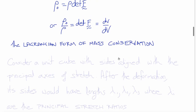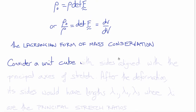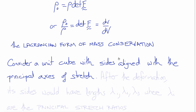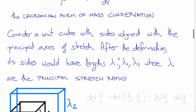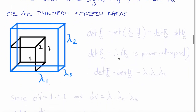To illustrate this, let's consider a unit cube whose sides are aligned with the principal axes of stretch. After the deformation, the sides would now have lengths λ₁, λ₂, and λ₃, which are the three eigenvalues of the stretch tensor U — so they are the principal stretches. Here we see that in this diagram: the original unit cube now has dimensions λ₁, λ₂, and λ₃.